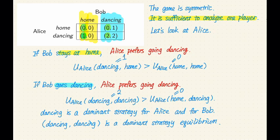The definition should say that if dancing is a dominant strategy for Alice, then Alice's utility for going dancing should be weakly better than her utility for any other strategy given any strategy for Bob.